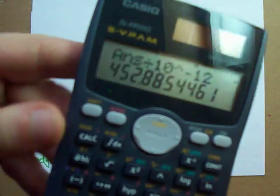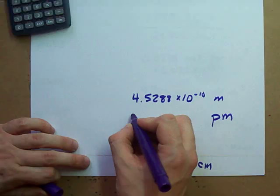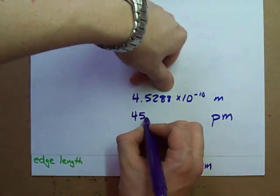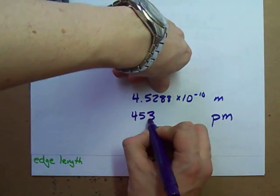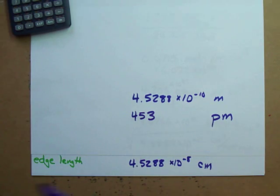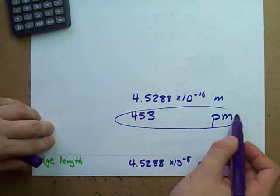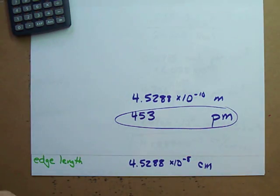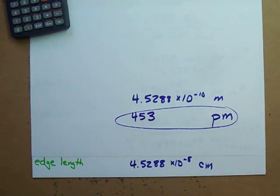And you get 453, or 452.88, whichever you prefer. So the edge length of this cell is 453 picometers. Best of luck in your own calculations.